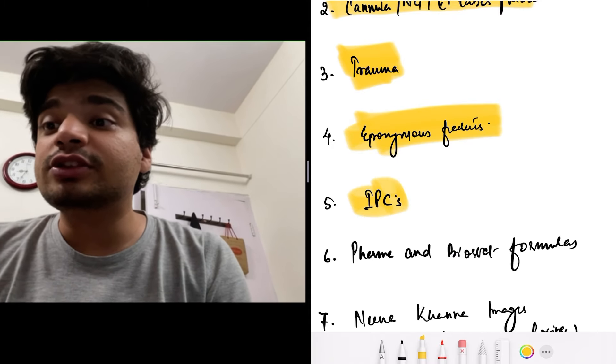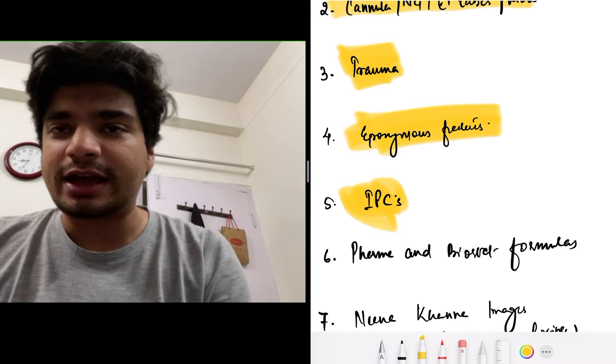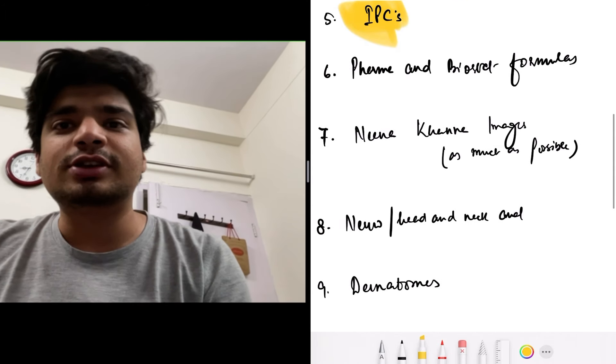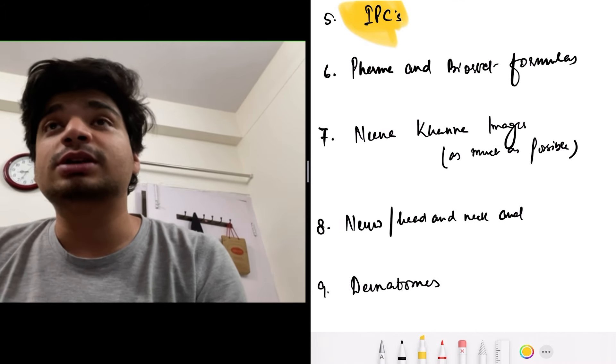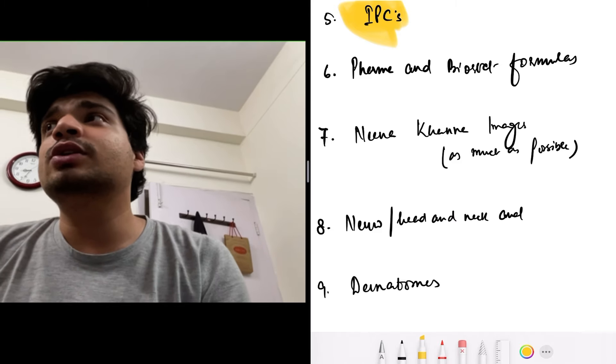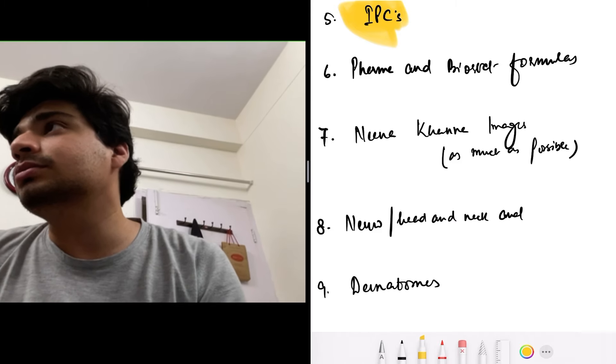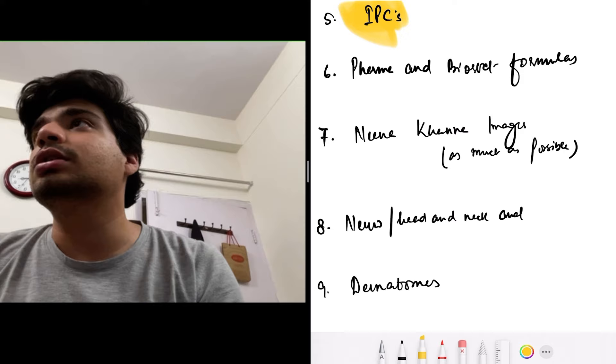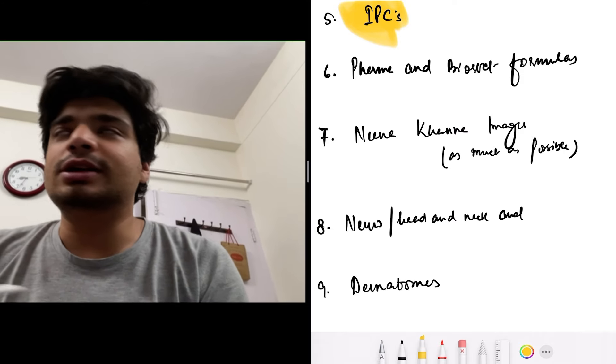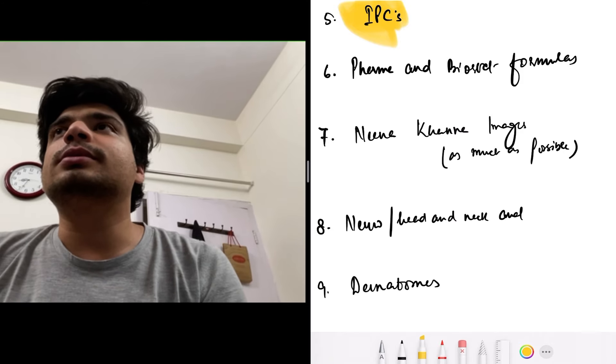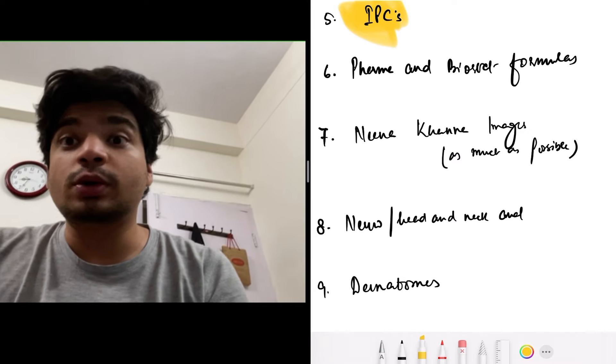In forensic, the sections and the IPCs - no matter how much you try, you will end up forgetting which section is related to rape, which is related to murder. Maybe you will still remember this, but the lesser known ones - adultery or infidelity, adultery, infidelity is the same, perjury and things like that, you won't probably remember.